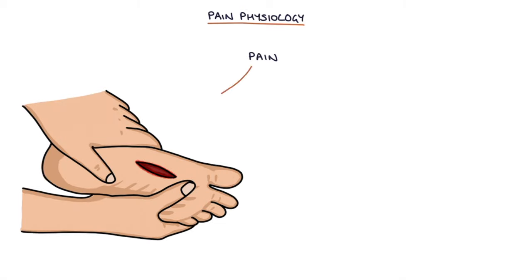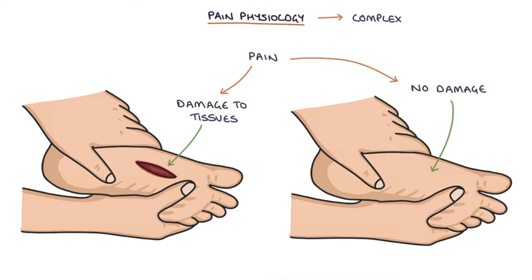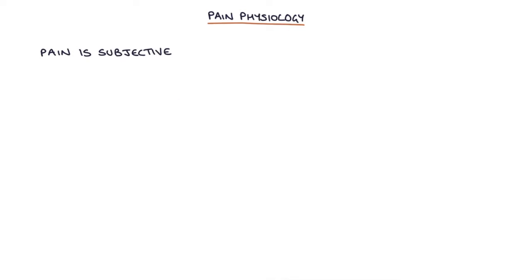Pain is supposed to indicate underlying or potential damage to tissues, but it can occur without any tissue damage. The physiology of pain is quite complex and there's still a lot that's not fully understood. Pain is subjective, meaning that when someone indicates they're in pain we need to accept their experience even when there's no apparent underlying cause.